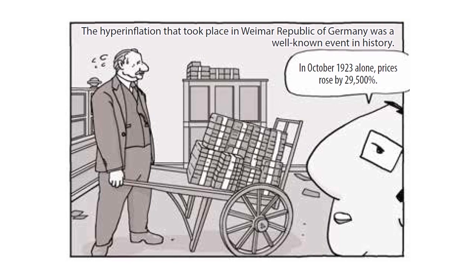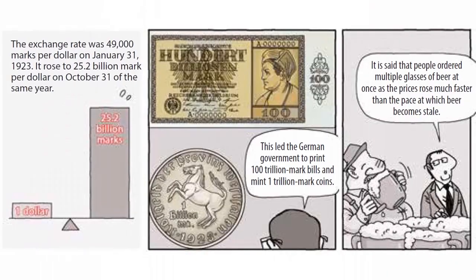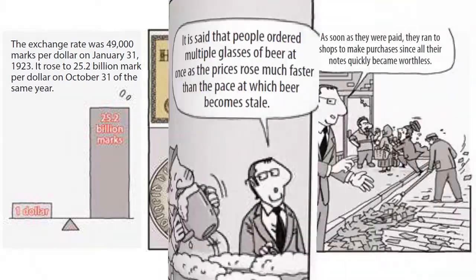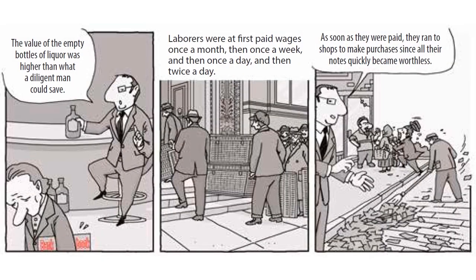The hyperinflation that took place in the Weimar Republic of Germany was a well-known event in history. In October 1923 alone, prices rose by 29,500%. The exchange rate was 49,000 marks per dollar on January 31, 1923, and it rose to 25.2 billion marks per dollar on October 31 of the same year. This led the German government to print 100 trillion mark bills and mint 1 trillion mark coins.